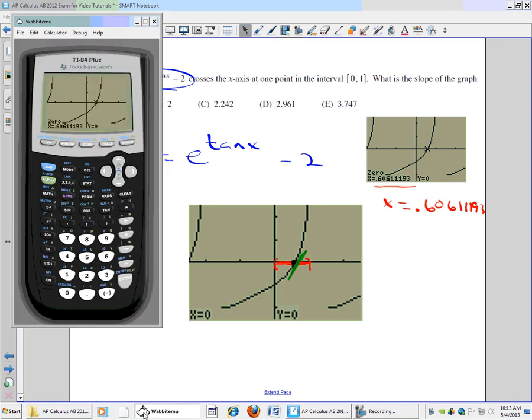So let's go back to our calculator. And we want to find what is the slope of the tangent line, which means we're looking for the first derivative. So let's go to second and calculate. And we see that number 6 gives us the first derivative. So we can use number 6.